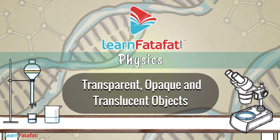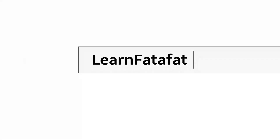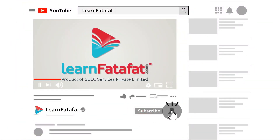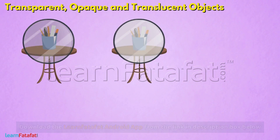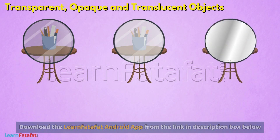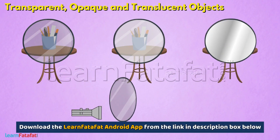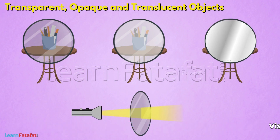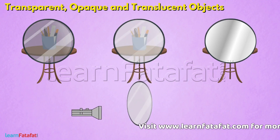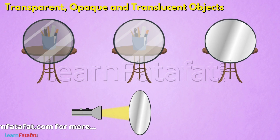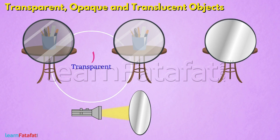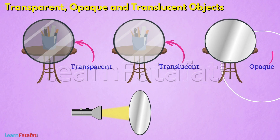Transparent, Opaque, and Translucent Objects. In our day-to-day life, you must have observed that we can clearly see things through some objects but not through others. It is because different objects allow different amounts of light to pass through them. Accordingly, we can classify objects as Transparent, Translucent, and Opaque objects.